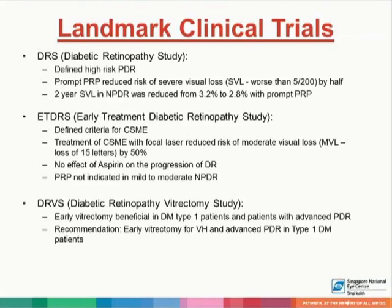The landmark clinical trials include the Diabetic Retinopathy Study, which defined high-risk PDR and suggested that prompt PRP reduced risk of severe vision loss — defined as worse than 5/200 — by about 50%. Two-year severe vision loss in NPDR was reduced from 3.2% to 2.8% with prompt PRP. The ETDRS defined criteria for CSME, found that treatment of CSME with focal laser reduced risk of moderate visual loss — defined as loss of 15 letters — by 50%, found no effect of aspirin on progression of DR, and showed PRP is not indicated in mild to moderate NPDR.